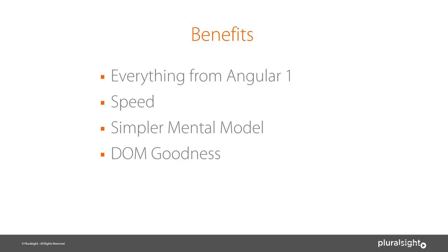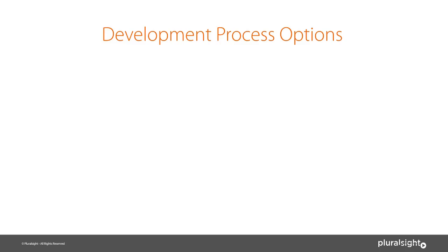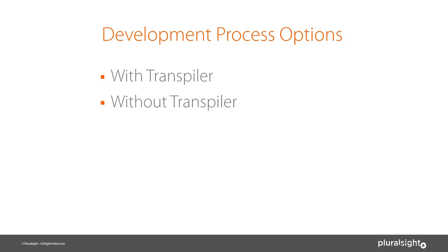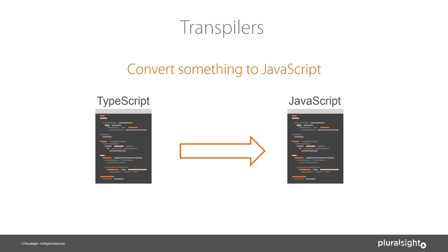When building with Angular 2, you basically have two options: develop with a transpiler or develop without. A transpiler basically converts one language into another. Great examples are the TypeScript transpiler, which converts TypeScript into JavaScript, or CoffeeScript. There are also plenty of transpilers that transpile from ECMAScript 6 to ECMAScript 5. ECMAScript 5 is the current version of JavaScript; ECMAScript 6 is the up-and-coming version.